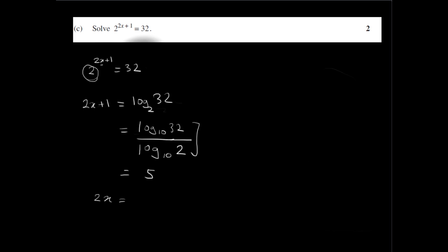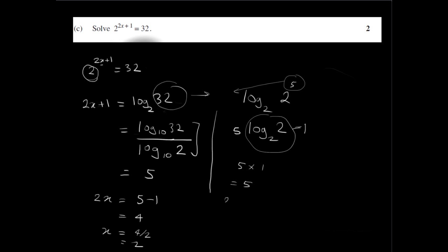And so 2x would be 5 minus 1, which is 4. And x is 4 over 2, which is 2. Alternatively, you could look at 32 and see that it's 2 to the power of 5. So log 2 of 32 would be log 2 of 2 to the power of 5. And using log laws, we know that the index can be brought down. So this would be 5 log 2 of 2. Log 2 of 2, this becomes 1. Again, using the log laws, it's 5 times 1, which equals to 5. In other words, 2x plus 1 equals to 5, and therefore x equals to 2. So there's two approaches there that you can use.